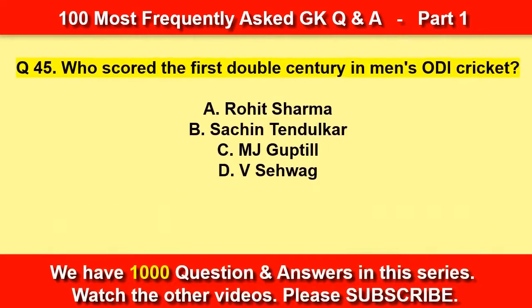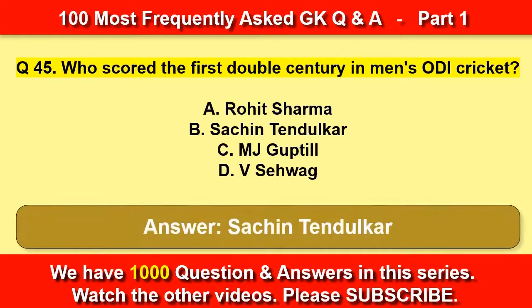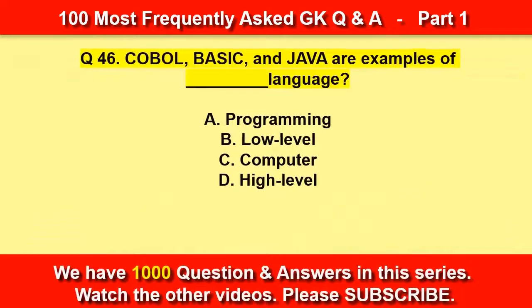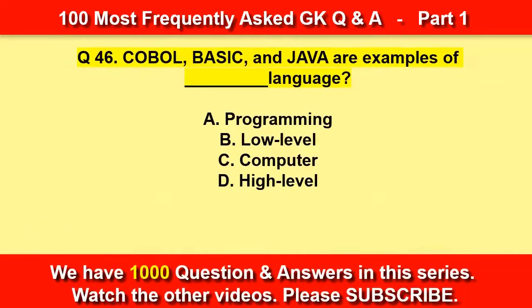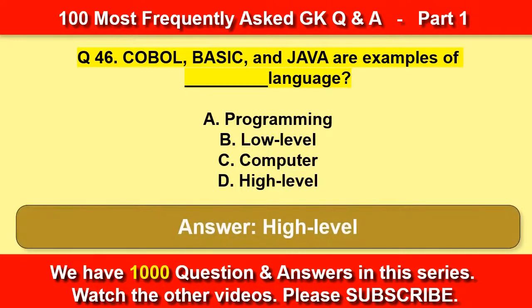Who scored the first double century in men's ODI cricket? Sachin Tendulkar. COBOL, BASIC, and Java are examples of — High level language.